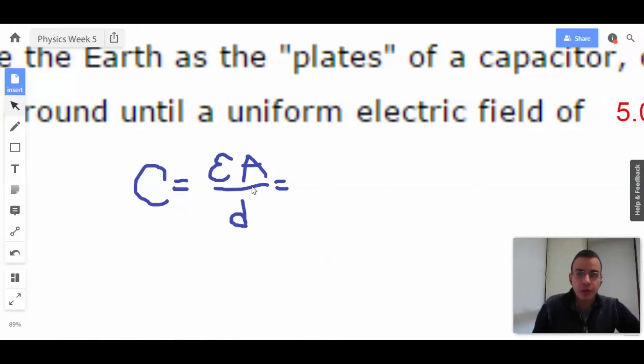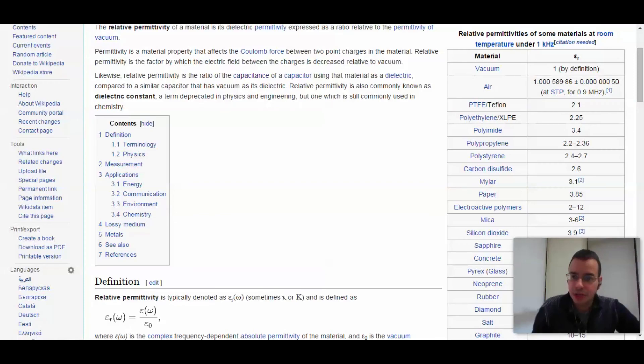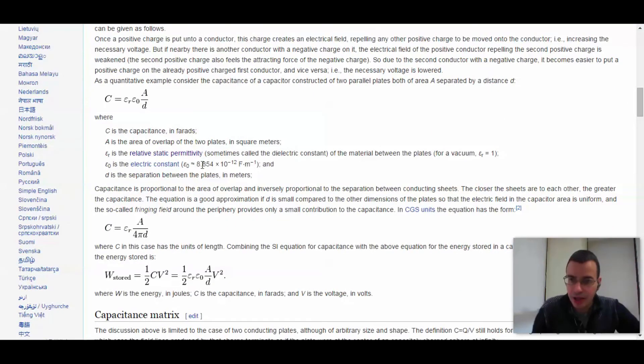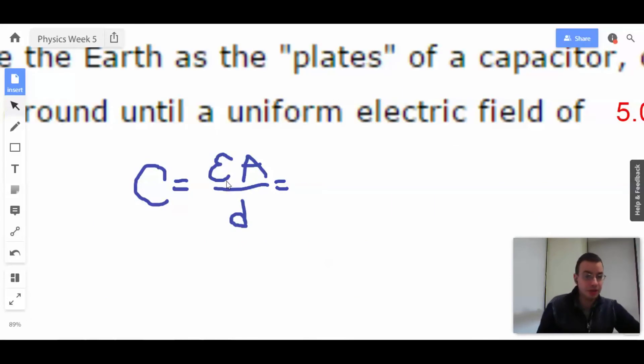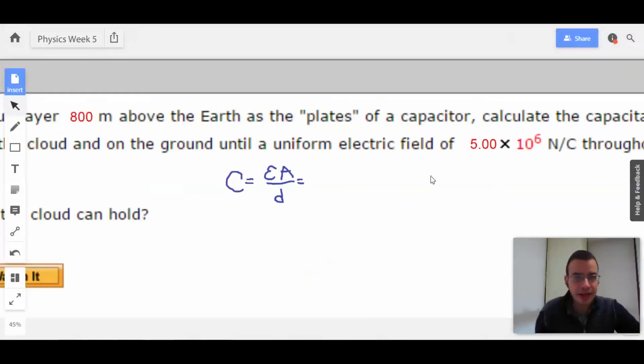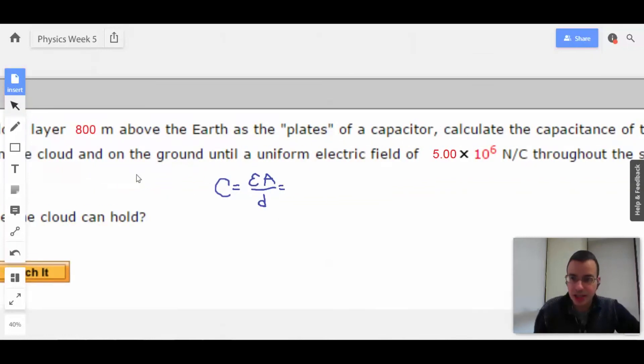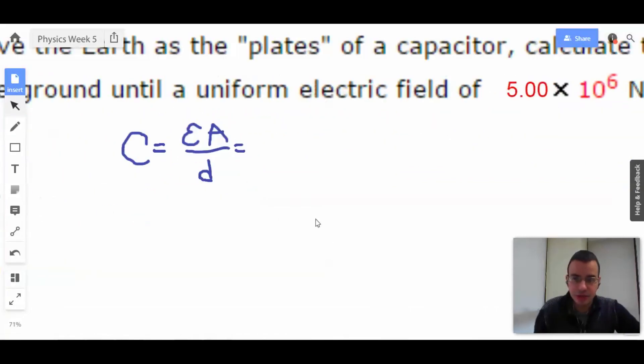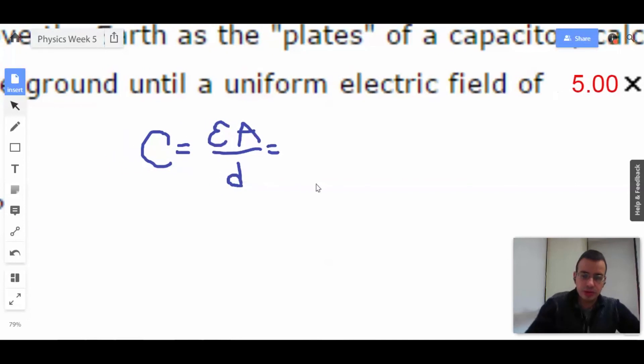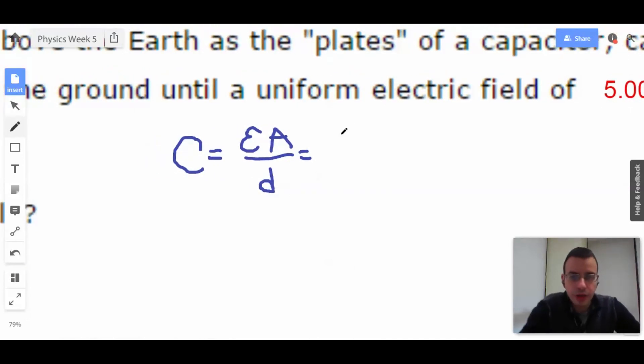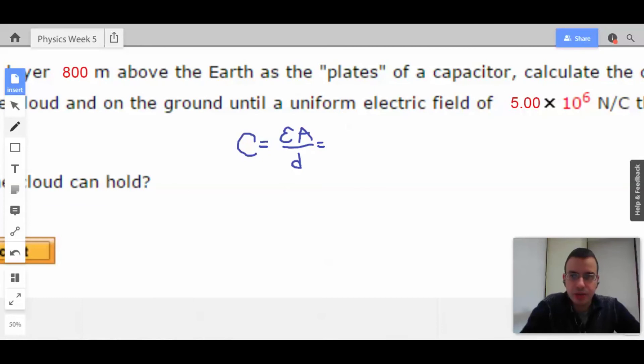So then what we're going to have, I should probably check to make sure I got my values. Yep, 8.85 times 10 to the negative 12. Okay, so epsilon is going to be epsilon naught, A is going to be the square kilometer that was mentioned, and D is going to be the 800 meters. So that's all we need to do. Interesting. I should probably write this out just in case.